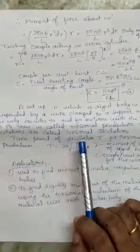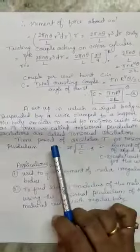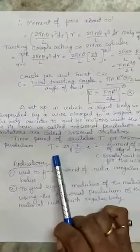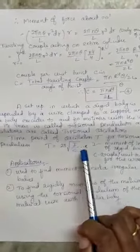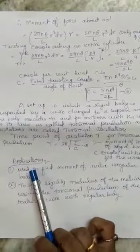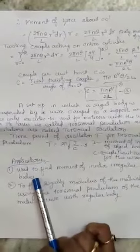So time period is given by T = 2π√(I/c), where I is moment of inertia of the rigid body and c is couple per unit twist for the wire.